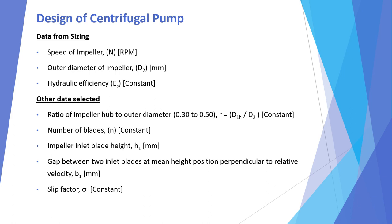The ratio of impeller hub or root diameter to outer diameter, r = D1h / D2, typically varies from 0.3 to 0.5. The number of blades N can be 4, 5, 6, 7, 8, 9, or 10. The impeller inlet blade height H1 is selected, as is the gap between two inlet blades at mean height position perpendicular to the relative velocity, B1 in mm. A slip factor sigma is also selected. These are the design-selected values.